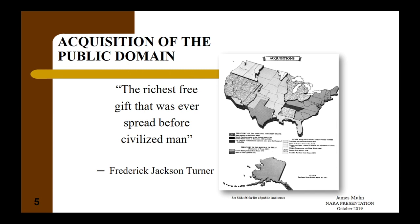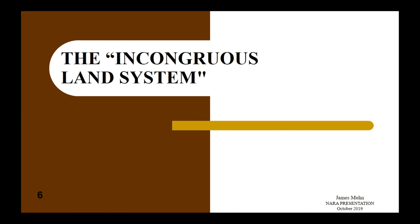Homestead entries could only be made on public lands. As a result, no entries could be made in the original 13 states, Maine, Kentucky, Tennessee, Texas, or Hawaii. Exclusive of Alaska, 1.5 billion acres of public lands were acquired, and it is on these lands that homesteads could be made. The Homestead Act was but one of a dozen laws providing for the disposal and management of public lands.